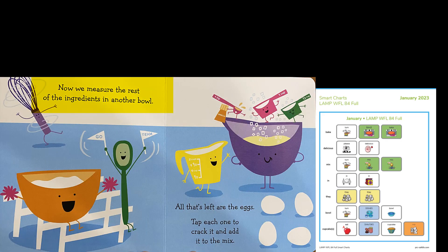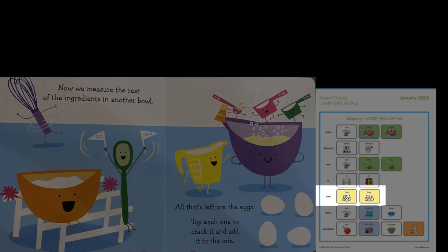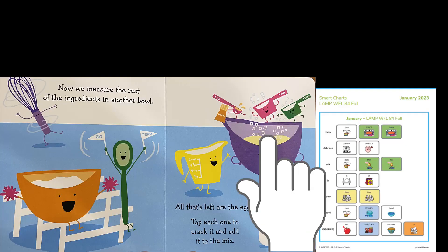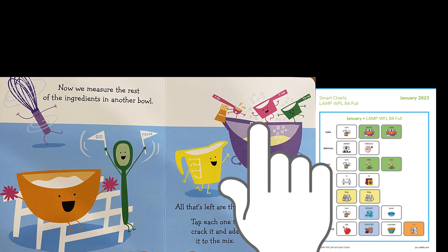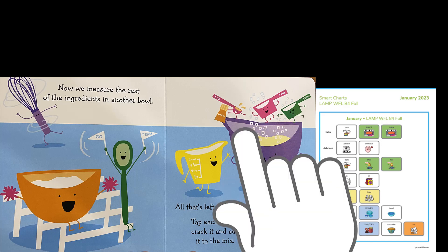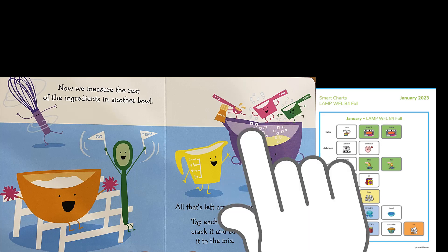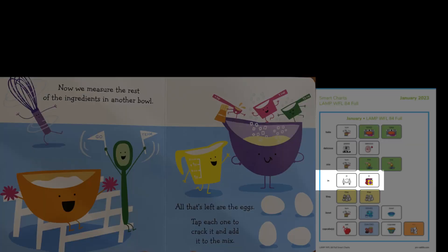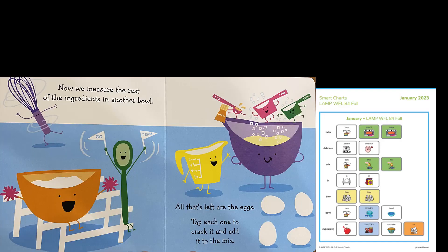Now we measure the rest of the ingredients in another bowl. All that's left are the eggs. Tap each one to crack it and add it to the mix. I see the eggs — they are on the counter. Let's crack them and put them in the bowl. We crack them and put them in the bowl. What do you think we will put in next?